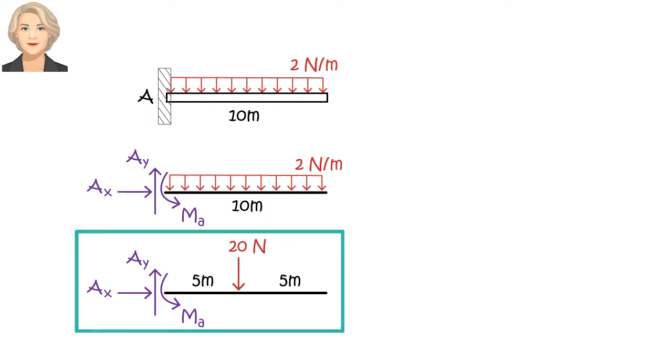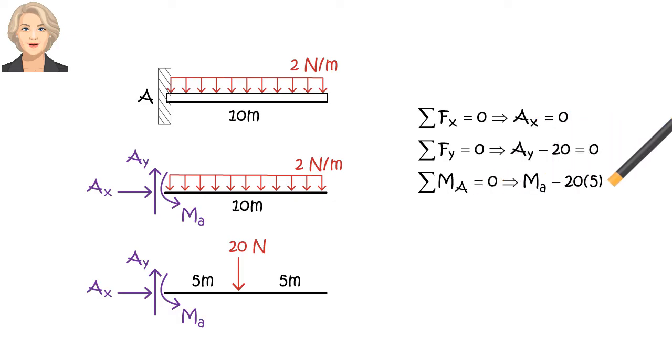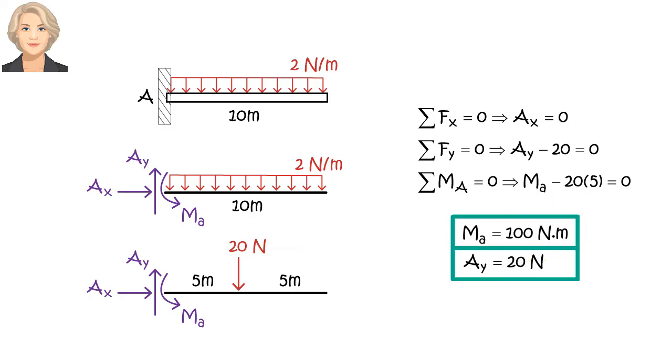Then, we write the equilibrium equations. AX equals zero. AY minus 20 equals zero. MA minus 20 times 5 equals zero. Solving the last equation for MA gives MA equals 100. From the second equation, we get AY equals 20. And obviously, the first equation gives us AX equals zero.